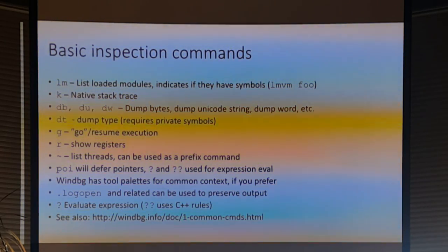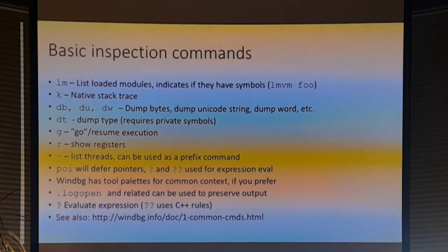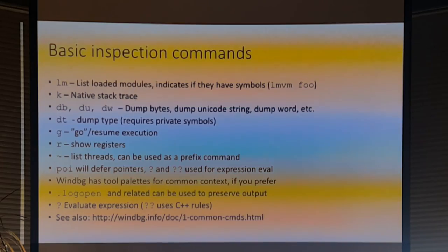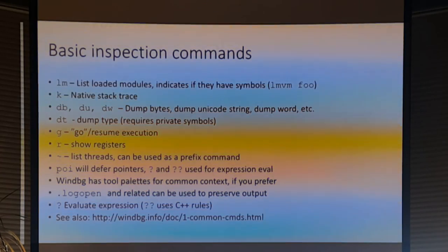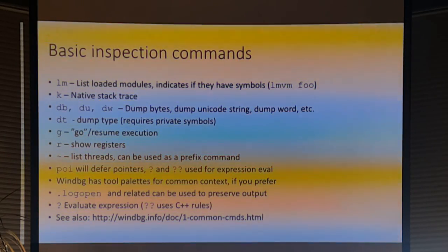Some basic inspection commands: LM we already saw — use it all the time to see loaded modules. K is your basic stack trace; when all else fails hit K and figure out where you are. 'D' followed by a letter stands for 'dump': DB is dump byte, DU is dump Unicode string, DT is dump type — mostly for native code with structs or classes in C++. I use DB and DU all the time to look at memory, similar to memory windows in Visual Studio.